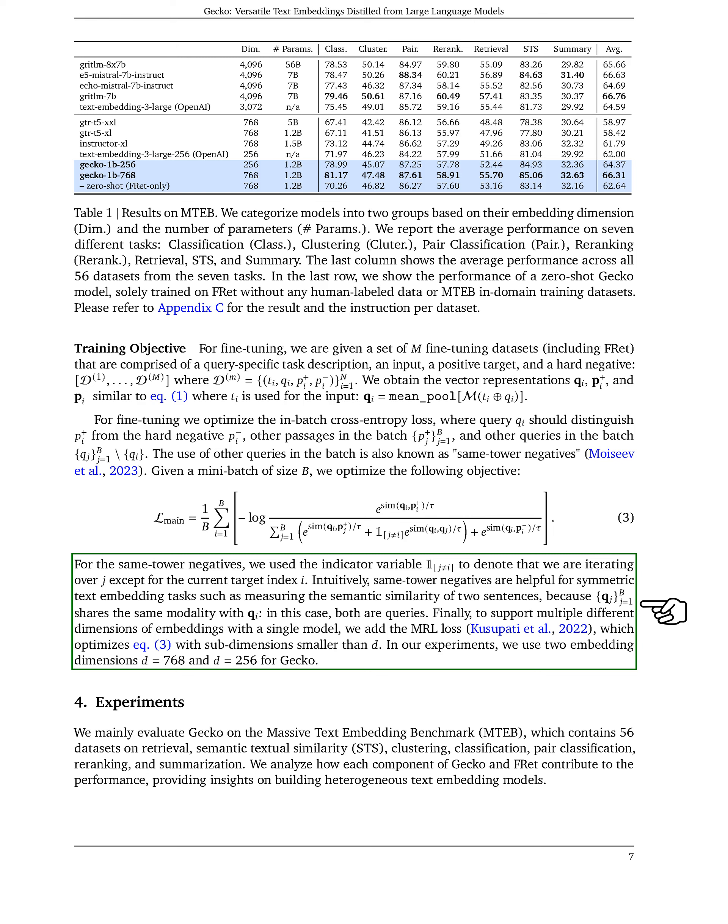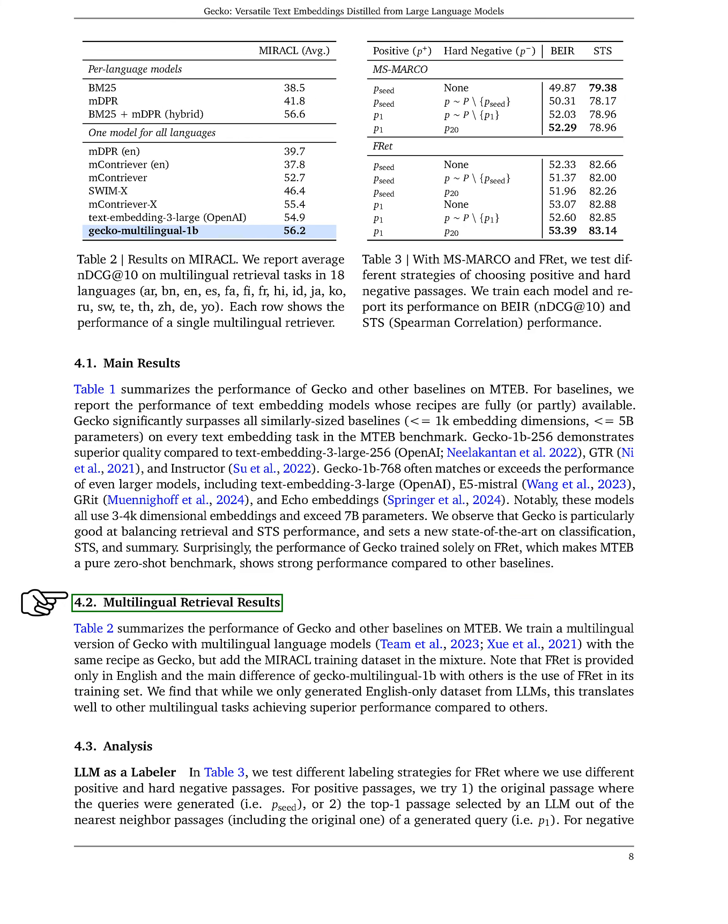The main results show that Gecko outperforms other baselines on all text embedding tasks in the MTEB benchmark, even surpassing larger models in some cases. It excels in balancing retrieval and semantic textual similarity performance, setting new benchmarks in classification, STS, and summarization tasks. Surprisingly, Gecko trained solely on FRET performed strongly compared to other baselines, making MTEB a challenging zero-shot benchmark.